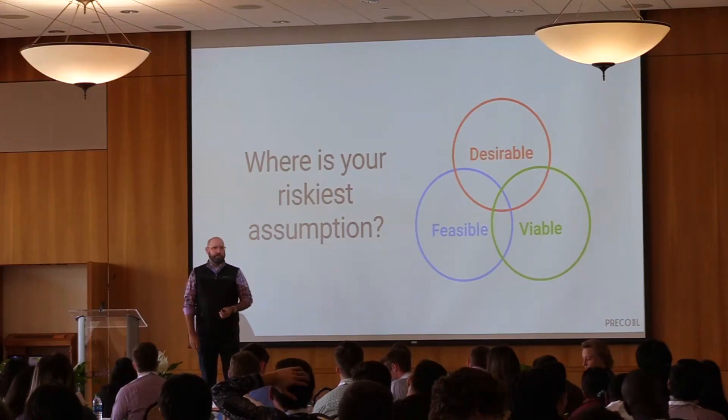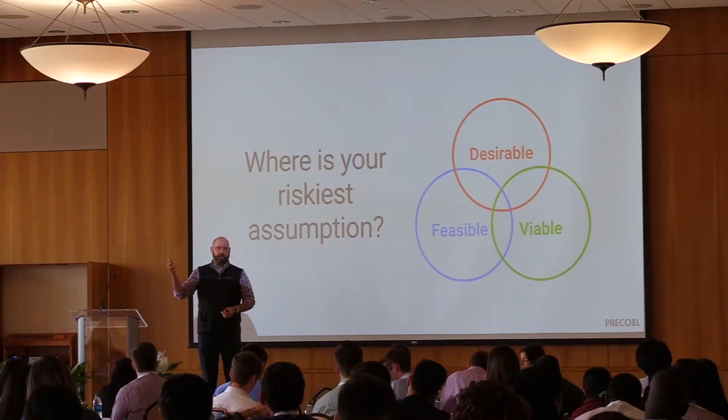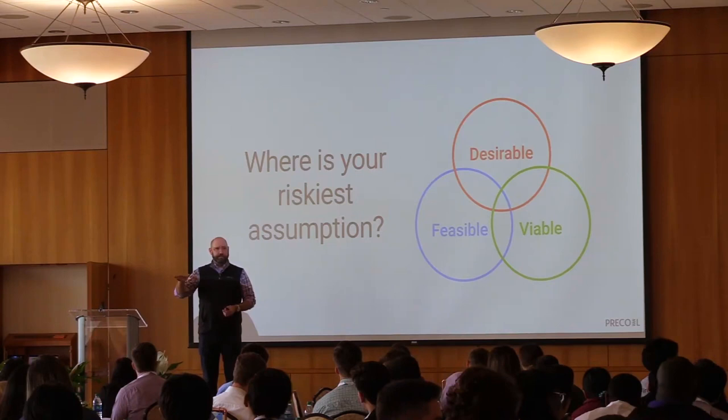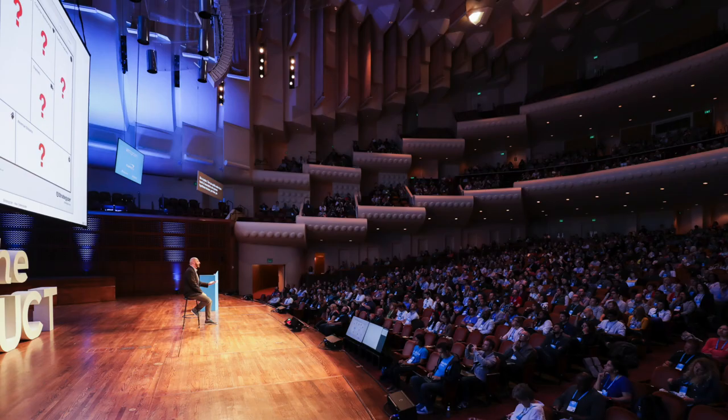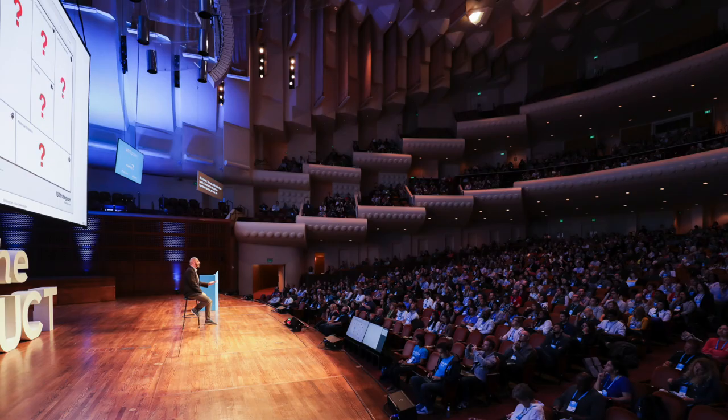Where do you think your biggest risk is? Is it in desirability — is it in value prop, customer relationship, channel, value prop? Is it there? Customer segment — that section? Is it the bottom — is it viability, cost structure, revenue stream? Or is it in feasibility — your partnerships, activities, resources? Is it there?